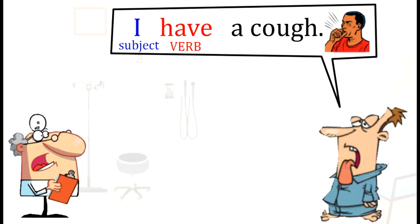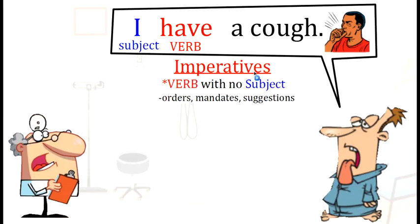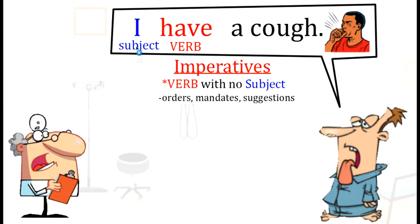Now it's time for our grammar. Today's grammar is imperatives. Imperatives are verbs with no subject. We use imperatives for orders, mandates, and suggestions. Mr. McDonald says, 'I have a cough.' This is a normal sentence in English because we have the subject 'I' and the verb 'have.' Normal sentences always use a subject for the verb. But imperatives do not use a subject with the verb — and these are orders, mandates, and suggestions.